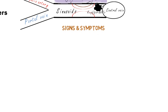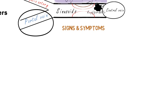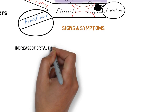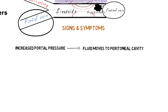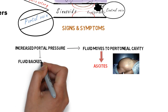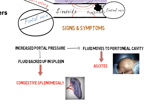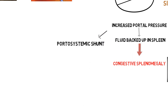Coming on to signs and symptoms — as we discussed in pathophysiology, portal hypertension occurs in cirrhosis. Higher portal venous pressure pushes fluid from blood vessels into tissues and across tissues into large open spaces like the peritoneal cavity. That is why cirrhosis causes increased peritoneal fluid, a condition called ascites, and can also result in congestive splenomegaly due to increased portal venous pressure. Also, due to high liver pressure, blood is diverted, leading to portosystemic shunting as blood follows the path of least resistance from the portal system to systemic circulation.